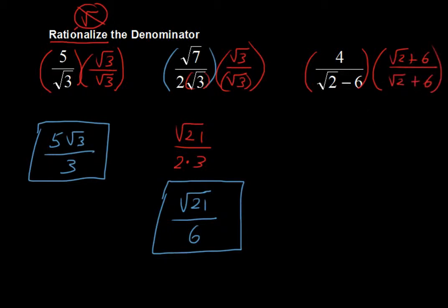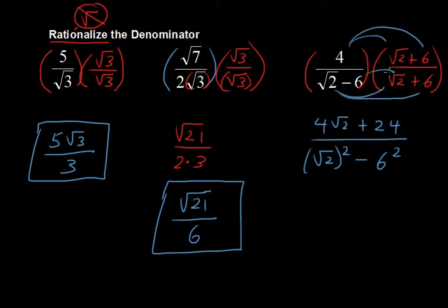Now what happens is I'm going to multiply this numerator, 4 times the square root of 2 and 4 times 6, and that gives 4 square roots of 2 plus 24 in the numerator. In the denominator, this is a product of a sum and a difference. So what we have in the denominator is the square root of 2 squared minus 6 squared. That's the way it works out. You can do FOIL to see that that does work, but ultimately that's what we get because the middle terms cancel out. We get 6 square roots of 2 minus 6 square roots of 2, and you multiply those. So this is what you have left.